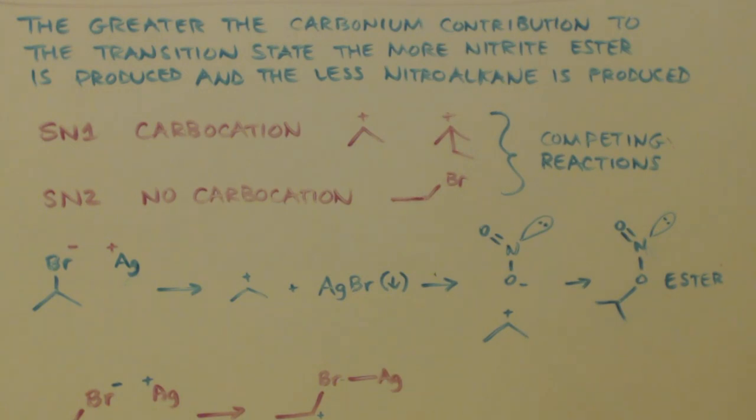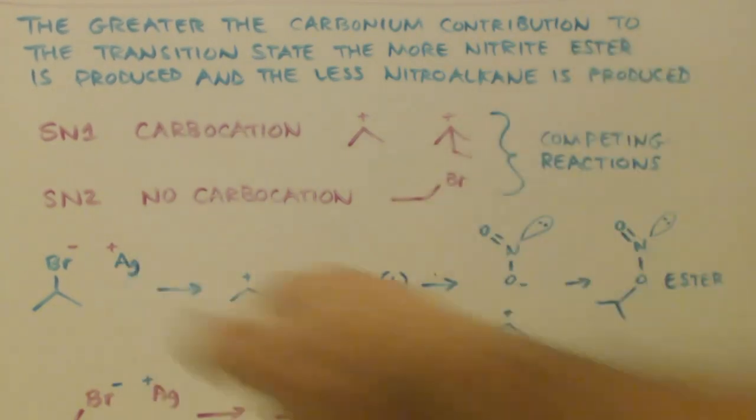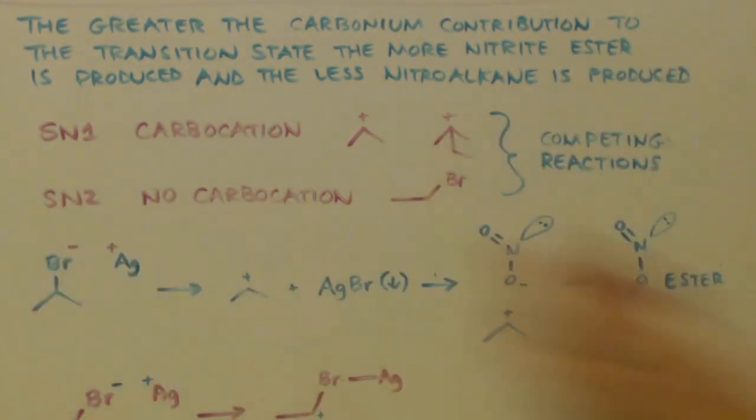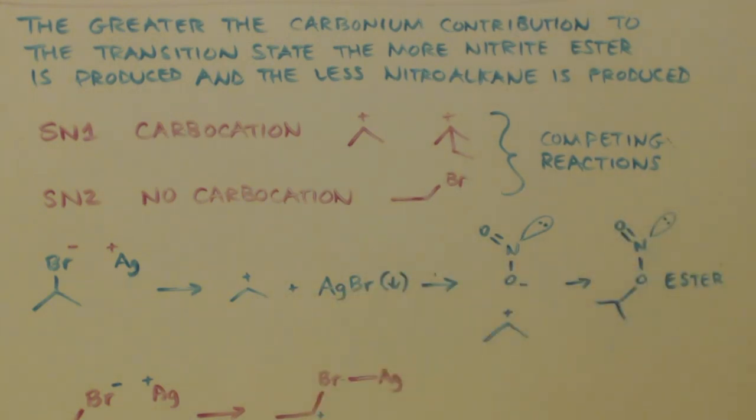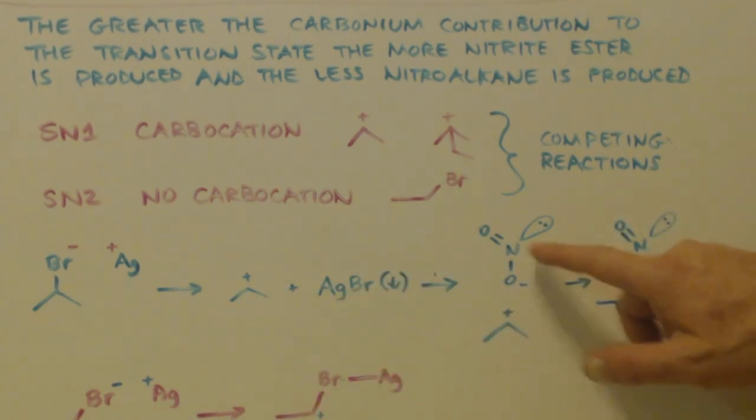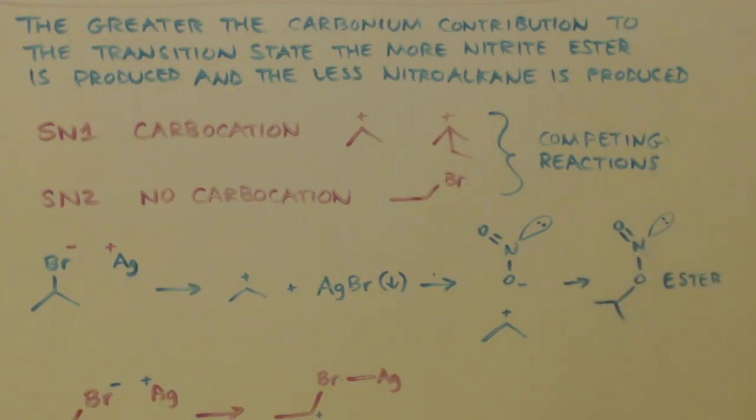If you use a primary bromoalkane, then there's no carbocation. You can't have a primary carbocation. So you're going to have to do an SN2 reaction. These are competing reactions. We have a primary, ethyl. That's primary, so we're obviously on the right track to doing the SN2, which will give us the nitroalkane instead of the ester. We've got one good thing going for us. So let's go over the mechanisms. I don't know the mechanisms. This is all guesswork right here, basically. But if you have a secondary, you have your silver's positive, your bromine's negative, they link up.